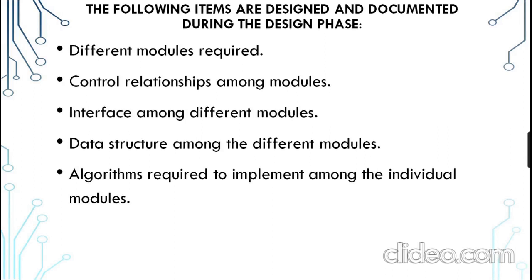We have to follow and document some items during the design phase: the different modules required, the control and relationships among the modules, the interfaces among the different modules, the data structures used among the different modules, and the kind of algorithm required to implement individual modules. These items are designed and documented during the design phase, helping the programmer write the system code and implement the system.